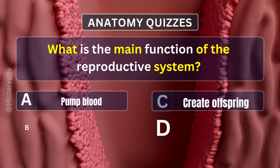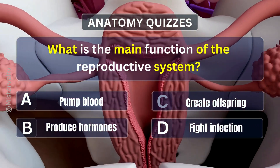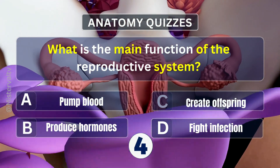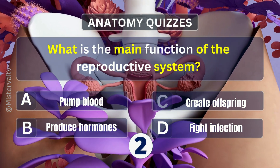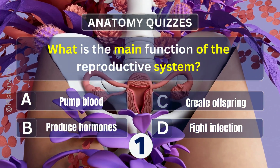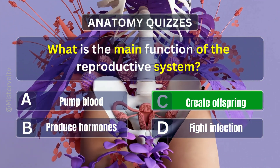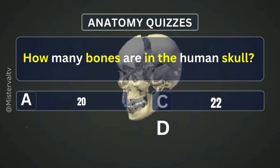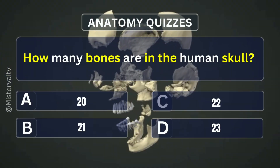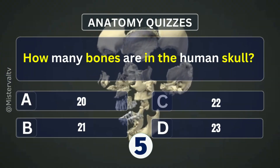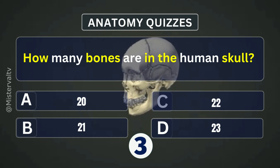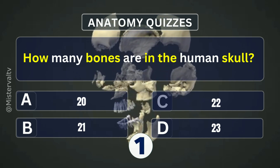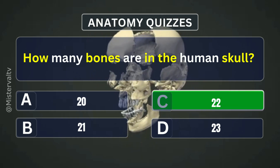What is the main function of the reproductive system? Answer. C. Create offspring. How many bones are in the human skull? Answer. C. 22.